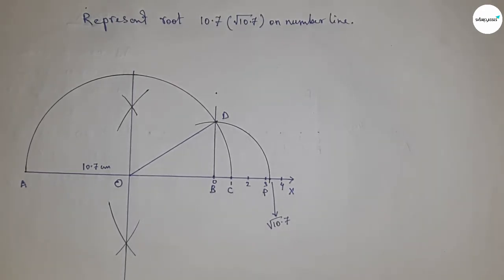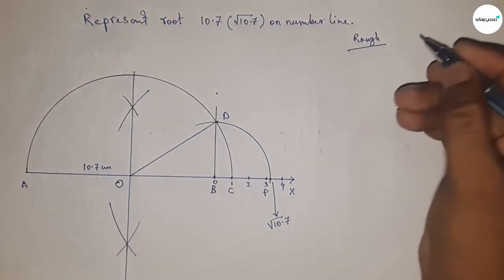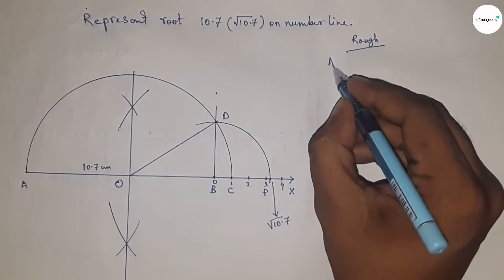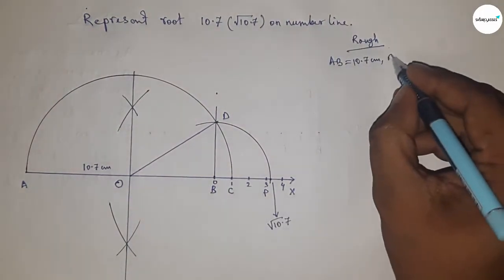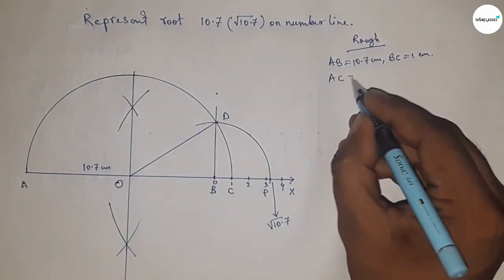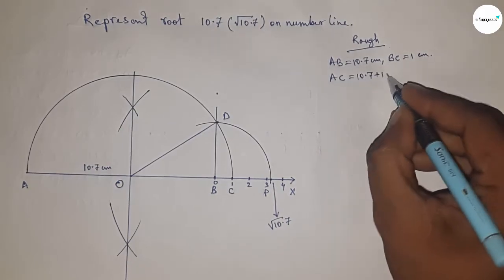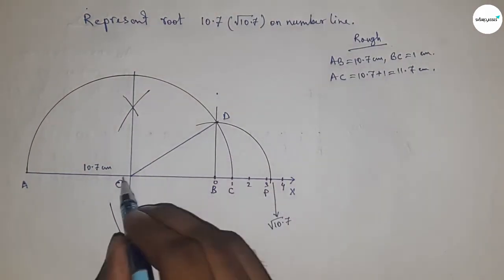Now roughly discussing the calculation. So given AB equal to 10.7 centimeter, BC equal to 1 centimeter. So we can write AC equal to 10.7 plus 1, so this is 11.7 centimeter.